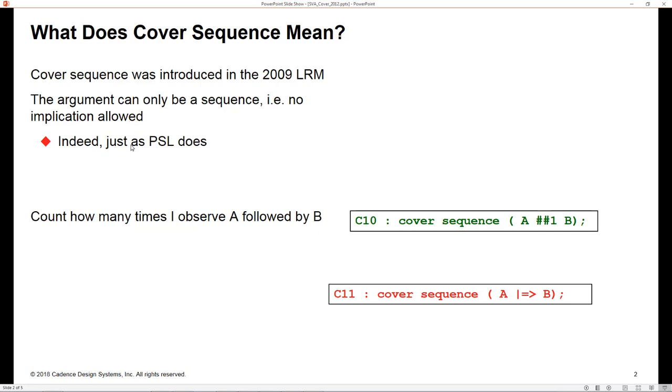The reason it was added, as most people who use PSL would know, was because in PSL you cannot say cover property. The syntax in the language does not allow that for a very good reason, and that very good reason is the same one that the SystemVerilog language reference manual had to change. When we say cover sequence A followed by B, it's completely obvious what we're doing - we're covering the sequence A followed by B, so there's no ambiguity about that statement at all.